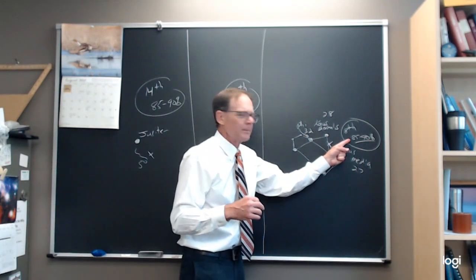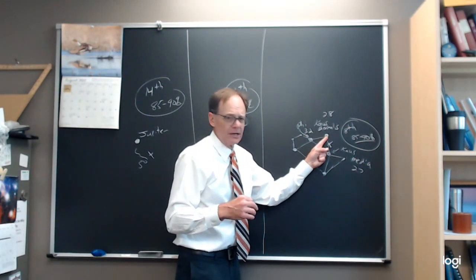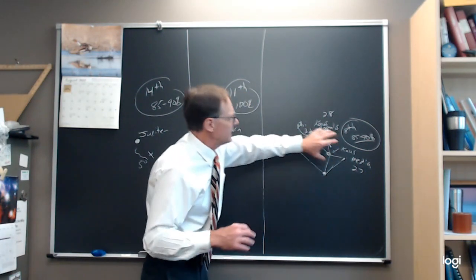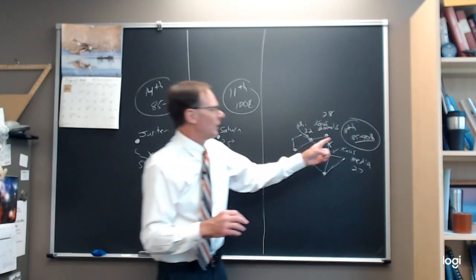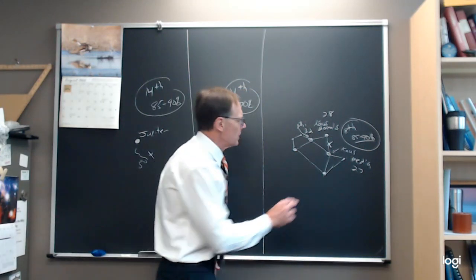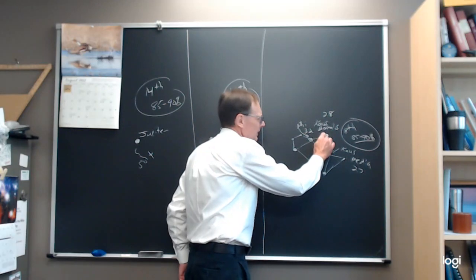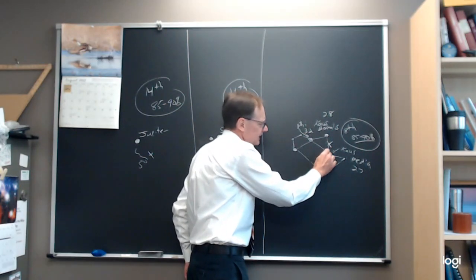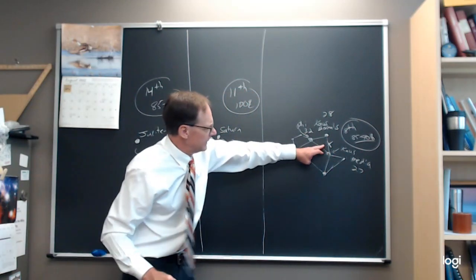And Phi up here is the faintest of the lid of the teapot, 3.2 magnitude. All of these stars are bright enough, not terribly bright, but bright enough that they should be able to hold up to this moon and you should be able to see them.